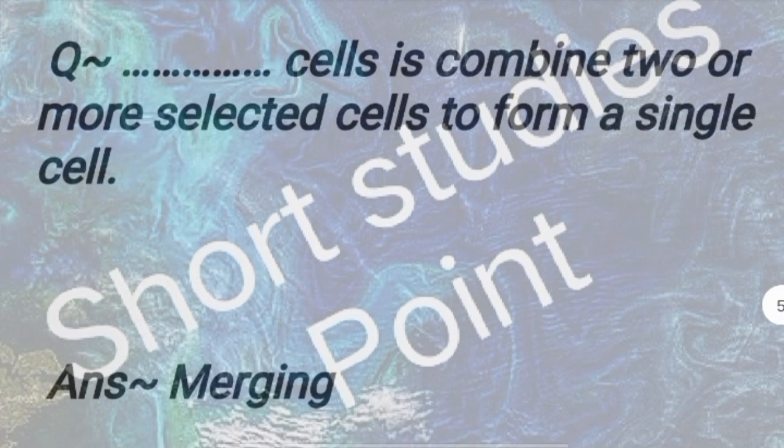Question: A dash cell combines two or more selected cells into a single cell. Answer: Merging. Next question.